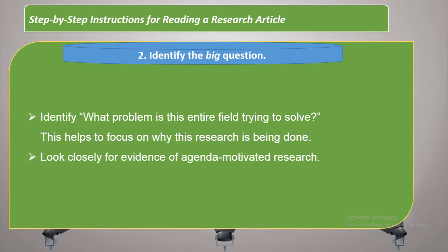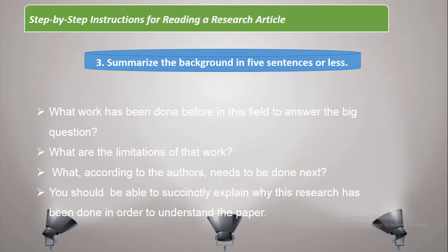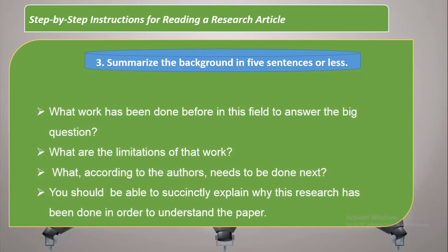When you know what problem the whole field is solving, you will come to the main idea or main focus of the paper. Also look closely for evidence of agenda-motivated research, meaning the paper is motivated toward a particular agenda. This provides a more interesting depth about the paper. The third step is to summarize the background in five sentences or less.